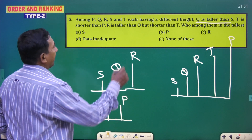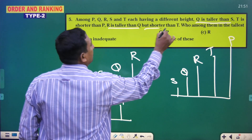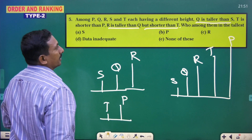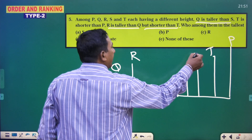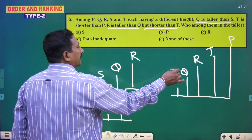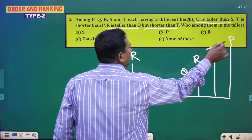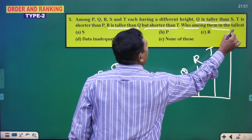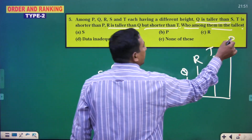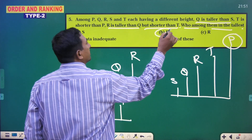R is taller than Q but shorter than T. So according to the data, who among them is the tallest person? P is the tallest person. Answer is P.